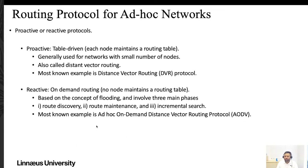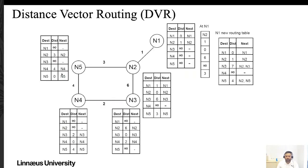The most well-known example of reactive routing is Ad-Hoc On-Demand Distance Vector routing, or AODV. Let's first look at Distance Vector Routing. DVR is an intradomain routing protocol in which all routers share information with each other to find the shortest path. They create routing tables and share their distance vector to neighboring nodes, allowing them to find the next hop or next router.